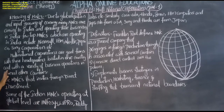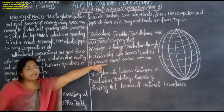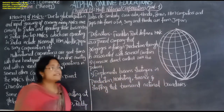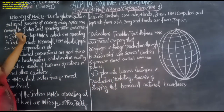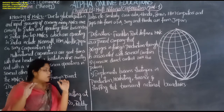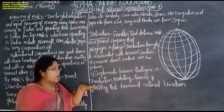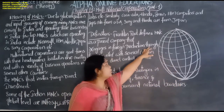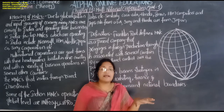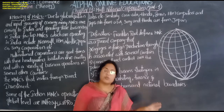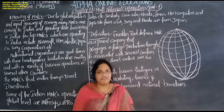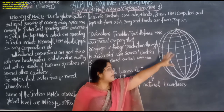Let us see the meaning and definition of MNCs. Multinational companies will cover the total globe. The meaning of MNCs arises due to globalization. Globalization means any organization can do business all over the world. Before globalization, there were certain restrictions — Indian companies had to work in India, American companies had to work in America. They had to work within the boundaries of their country only. But after globalization, it became a global market.